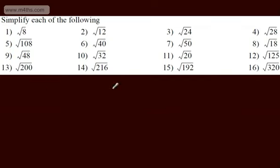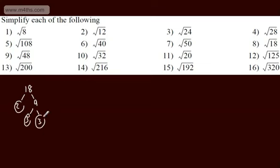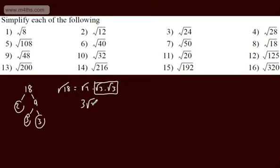Let's look at another one. We've got 18. We can divide by 2 to get 9, then divide by 3 to get 3. So we could write root 18 as root 2 multiplied by root 3 multiplied by root 3. This time we've got root 3 times root 3, which gives us 3, so we end up with 3 root 2.